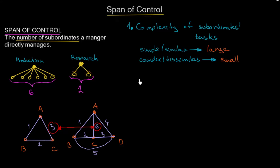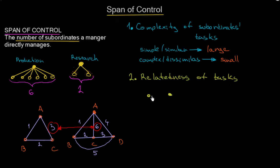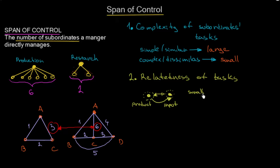The second factor influencing the span of control is the relatedness of tasks. Imagine you have two employees — one is producing something, creating a product, and that product is an input for the second employee's work, meaning the second person always has to wait for the first. That means their tasks are really related, and in that case you should have a small span of control. If tasks are very related and employees have to cooperate a lot, you should have a small span of control.